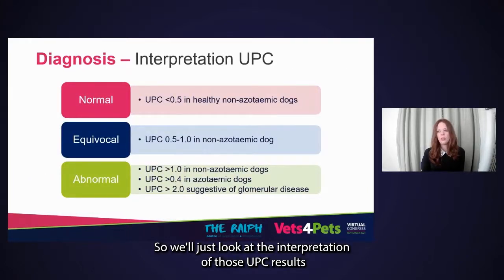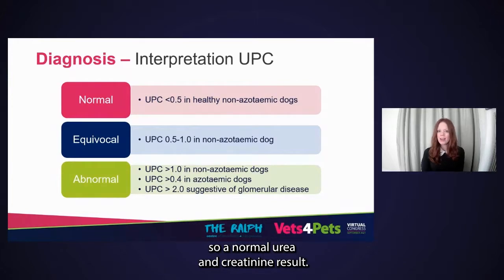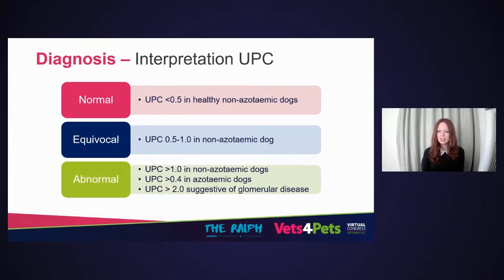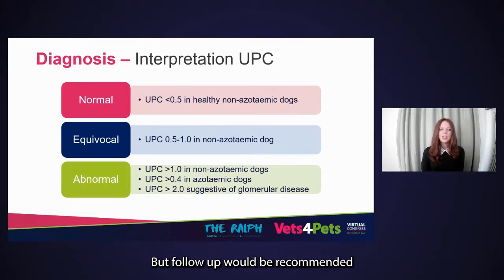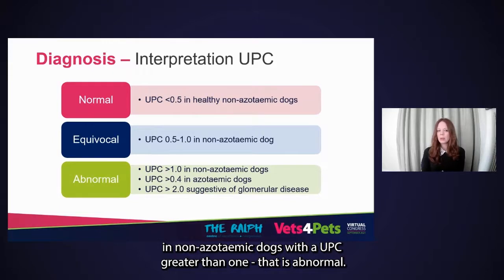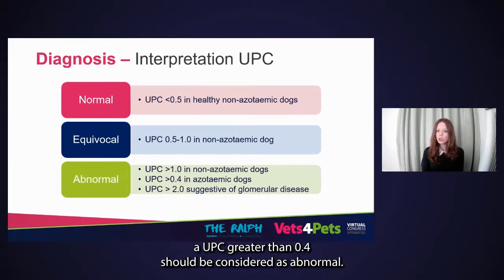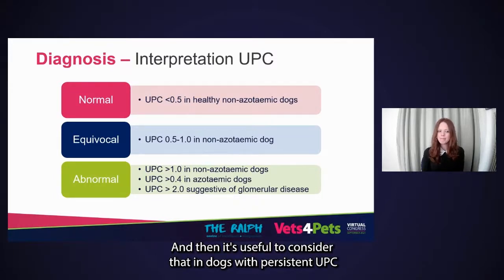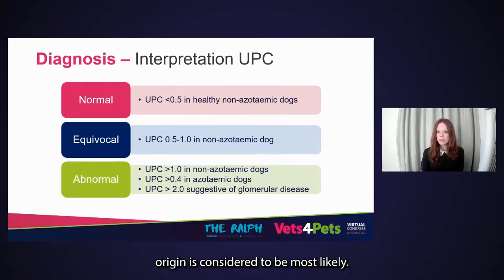Regarding interpretation of UPC results: in healthy non-azotemic dogs, the UPC should be less than 0.5. In healthy non-azotemic dogs with a UPC of 0.5 to 1, these are considered equivocal — immediate treatment isn't required but follow-up is recommended. In non-azotemic dogs with a UPC greater than one, that is abnormal. In azotemic dogs, a UPC greater than 0.4 should be considered abnormal. In dogs with persistent UPC greater than two where post-renal causes have been excluded, a glomerular origin is considered most likely.